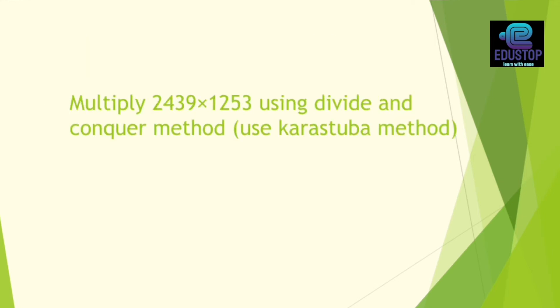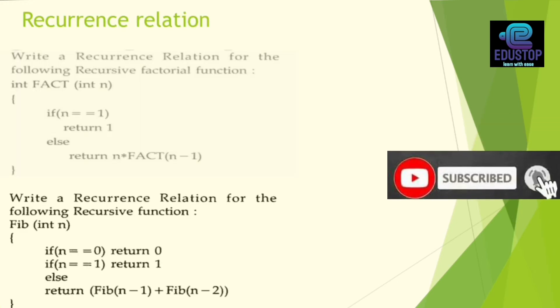Next, you have the question: multiply 2439 times 1253 using divide and conquer method. So which way to decide that we use the divide and conquer method. Then this is also important.